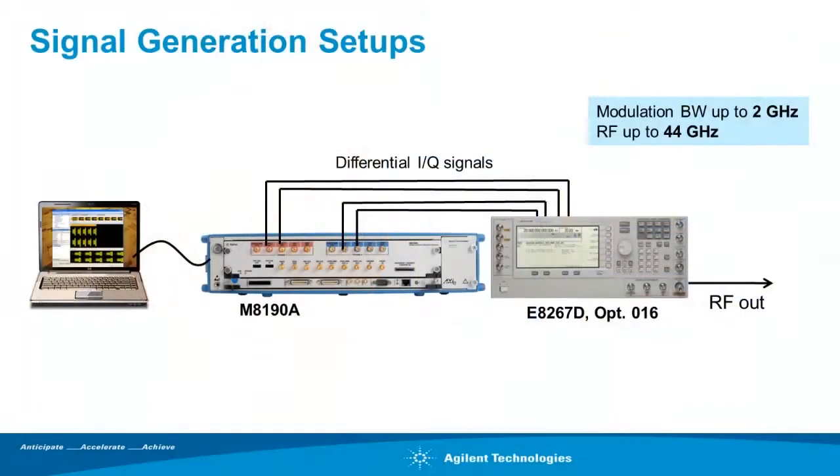Obviously, the M8190A can be used as an IQ baseband generator in conjunction with a vector signal generator to get to a target frequency range. However, upconversion using analog IQ signals usually generates some distortions and requires careful de-skewing, amplitude matching, and DC offset correction to achieve reasonable results, especially for modulation bandwidths of 1 or 2 GHz.